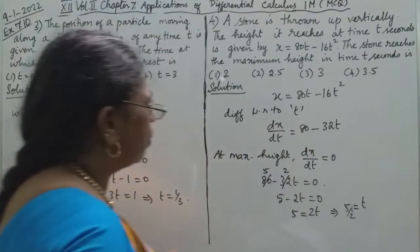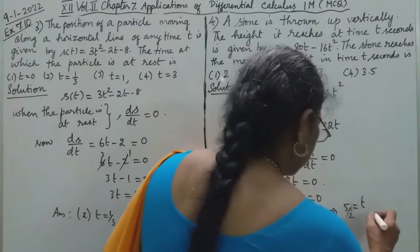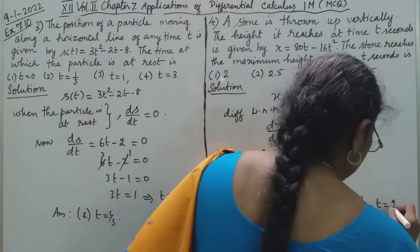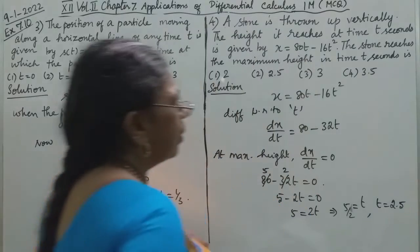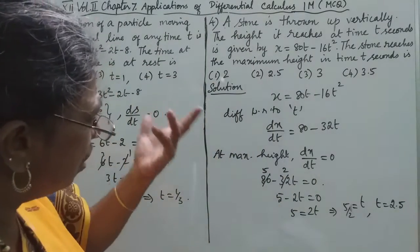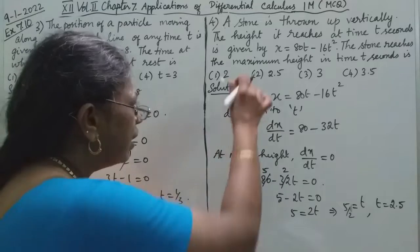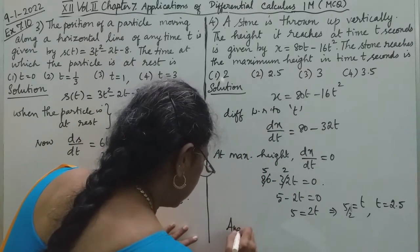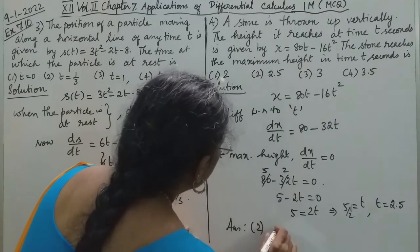t = 5/2, or 2.5 seconds. The answer is option 2, which is 2.5 units.